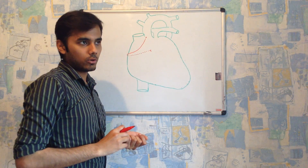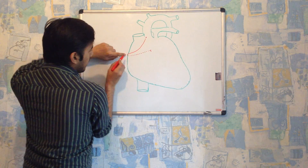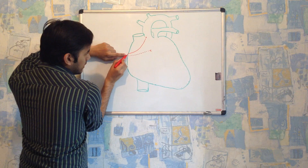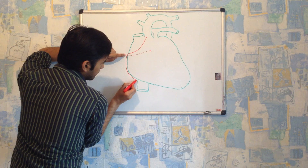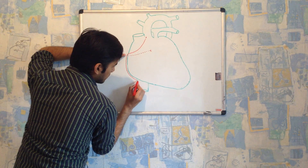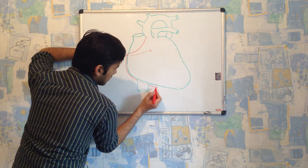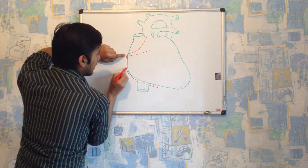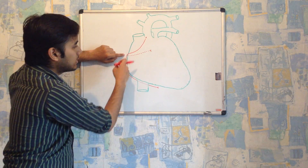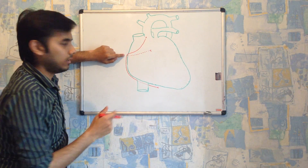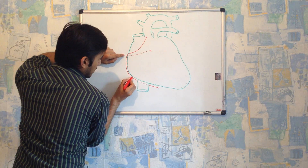There are also some branches coming from this right coronary artery. From the right coronary artery there is one branch descending down, passing behind the inferior vena cava. This artery is called the marginal artery — and as this is the right part of the heart, this artery is named the right marginal artery.